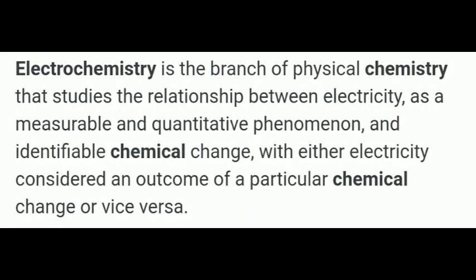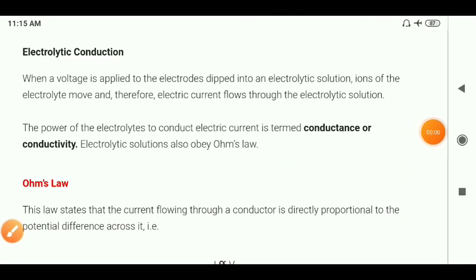We will see electrolyte conductance, that is the conductivity of electrolytes. When a voltage is applied to the electrodes dipped into the electrolyte solution, ions of the electrolyte move and therefore electricity can flow through the electrolyte solution. The ions move towards the opposite electrodes, and while moving, the ions produce electric current which flows through the electrolyte solution. The power of electrolytes to conduct electric current is termed conductance or conductivity.